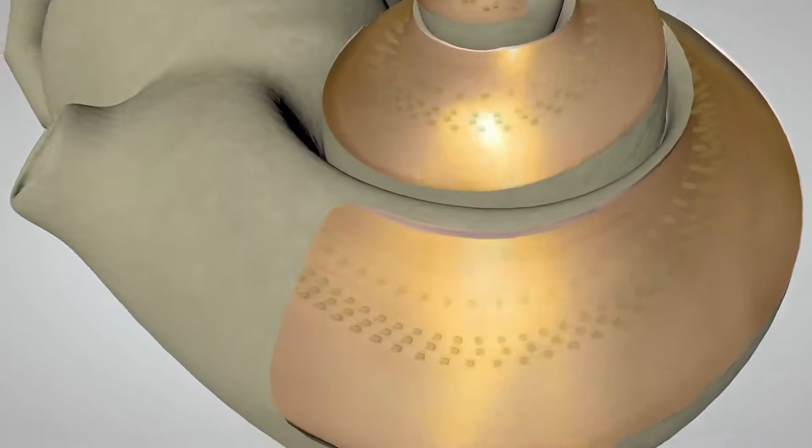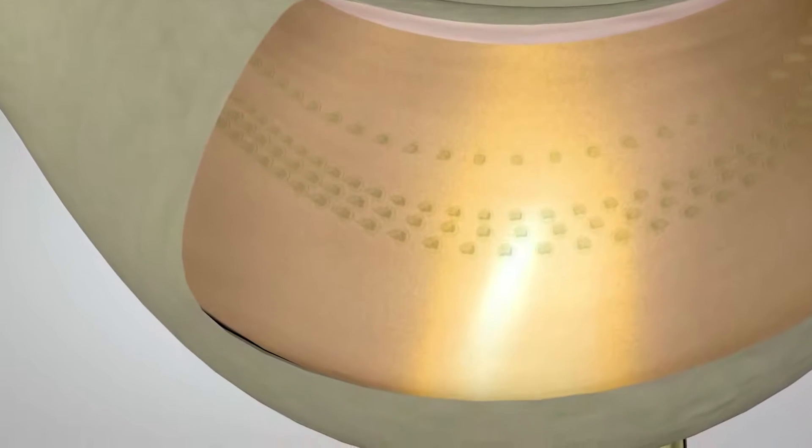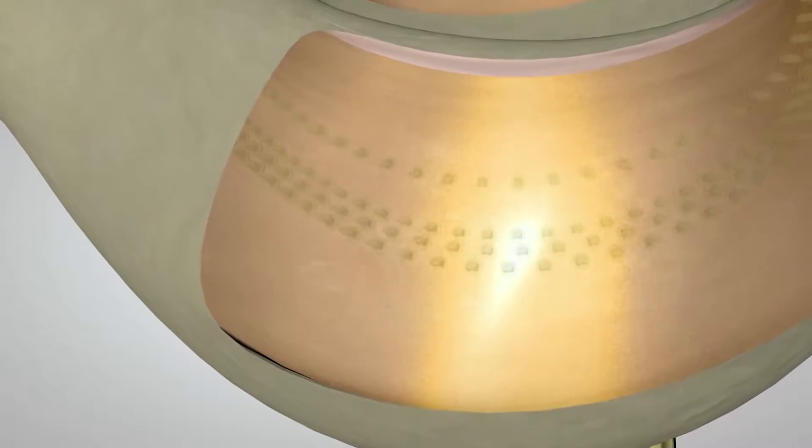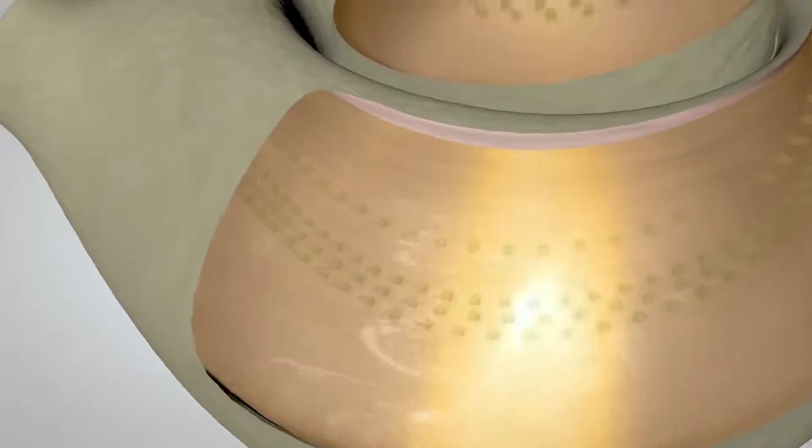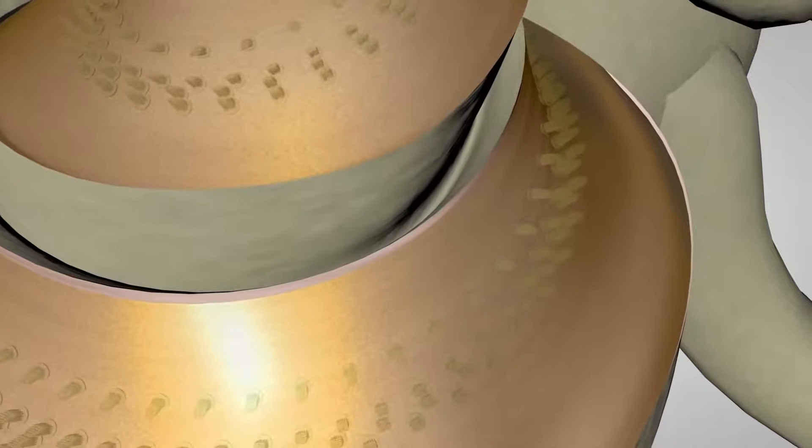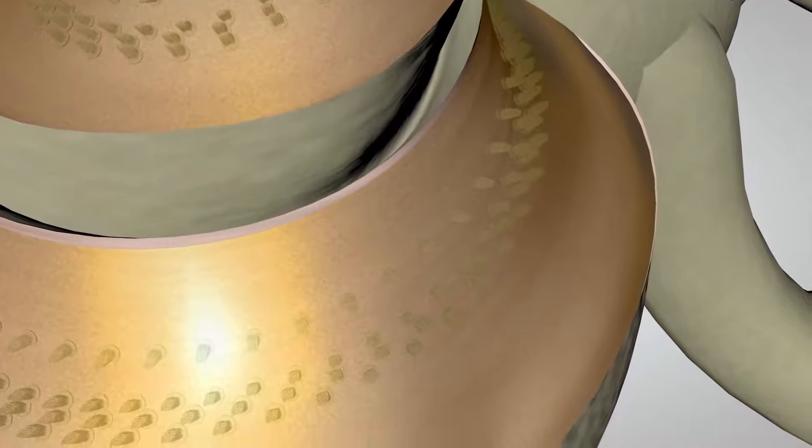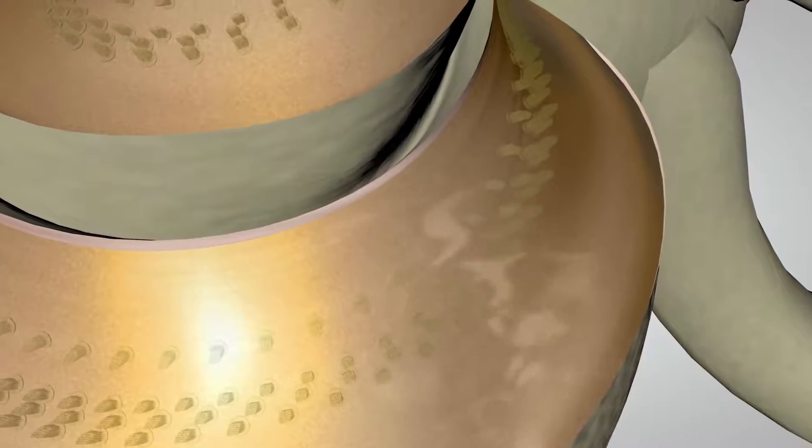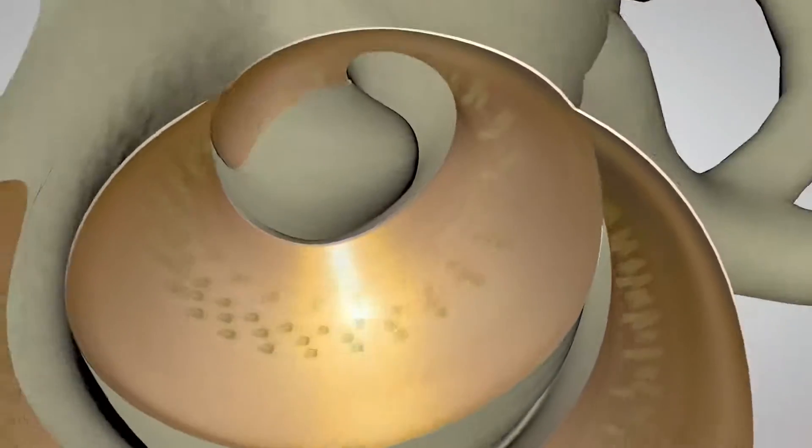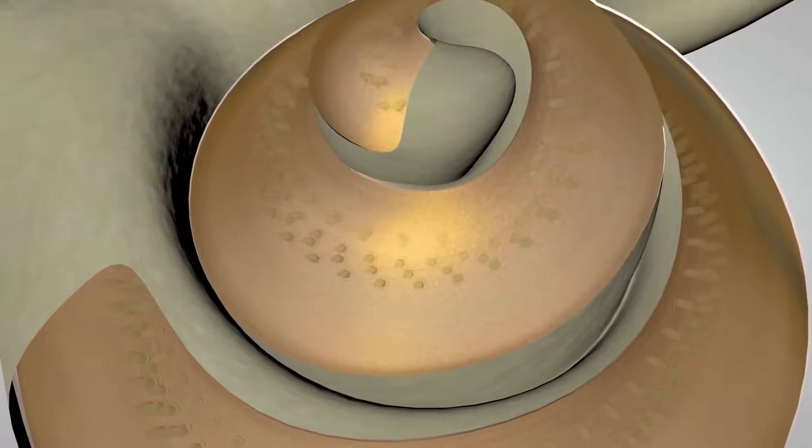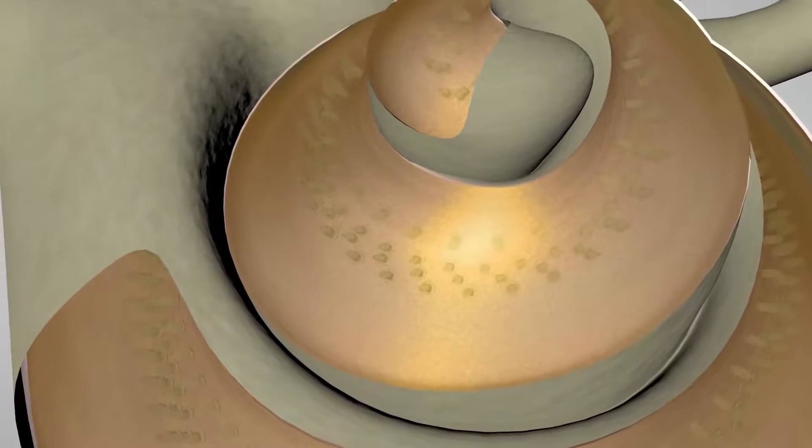The hair cells at the base of the cochlea detect higher-pitched sounds, such as a piccolo or flute. The hair cells toward the top of the spiral detect progressively lower-pitched sounds, such as a trumpet or trombone. At the very top or apex of the spiral, the hair cells detect the lowest-pitched sounds, such as a tuba.